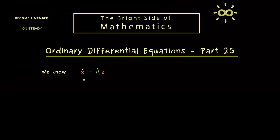We consider the ordinary differential equation given as x-dot equals Ax, where A is an n times n matrix — so it's a whole system. Moreover, we already know that if we have an initial value, then there is exactly one solution. Let's say the initial value condition is given as x at time 0 equals x₀, which simply means we fix a point in the space Rⁿ.